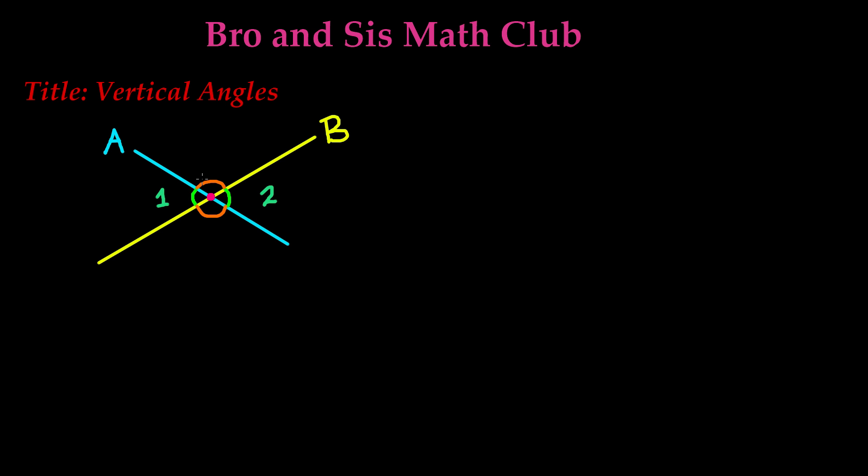The second pair of vertical angles is represented in the orange. This is angle 3 and angle 4. These two are vertical angles. So what exactly does it mean to be vertical angles?